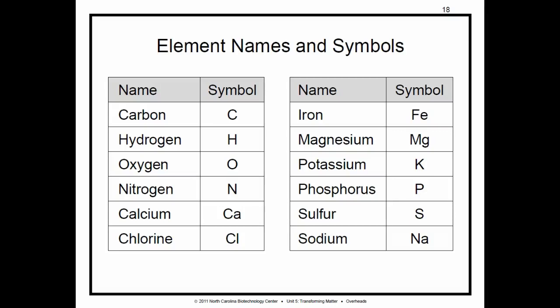All right, we're on page 36 of Unit 5, talking about element names and symbols. As a process technician, you will need to know the names and symbols for a few common elements, like those listed in the table.